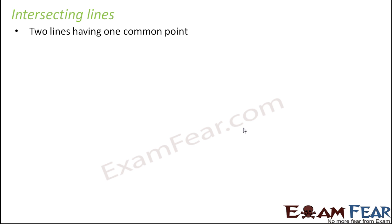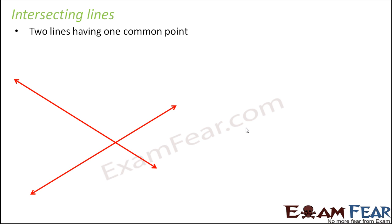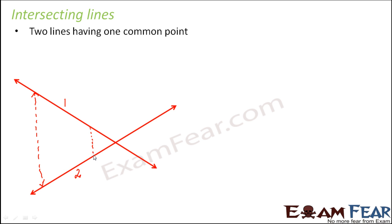Let us talk about intersecting lines. These lines have a common point — that is, they tend to meet at some point. This is line number one and this is line number two. The distance between them is not the same. For example, at this point the distance between line one and line two is this much, but at another point the distance is only this much.